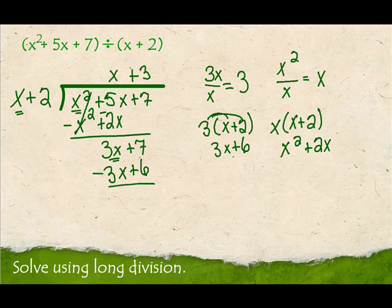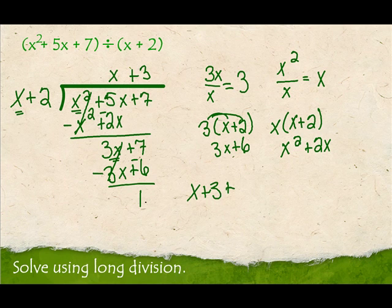Now I change the signs and add down. 3x minus 3x is 0, and 7 minus 6 is 1. There's no x in my 1, so x doesn't go into 1 — this ends up being my remainder. But remember, we don't write 'r'. We write it as x plus 3 plus the remainder 1 divided by x plus 2.